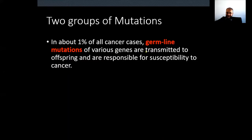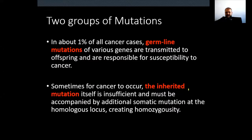About 1% of all cancers involve germline mutations transmitted to offspring, and sometimes the inherited mutation must be accompanied by an additional somatic mutation at the homologous locus creating homozygosity. So you have a mutant allele of one gene, and on the homologous chromosome at birth the person has a normal copy. When that normal allele mutates and is converted to the mutant allele, the patient is homozygous at that locus, and that causes the start of cancer.